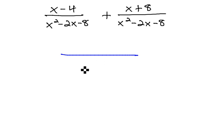Since they both have the same common denominator, we'll keep the denominator x squared minus 2x minus 8 and add the numerators together, which is simply combining like terms. x plus x is 2x, and negative 4 plus 8 is positive 4.